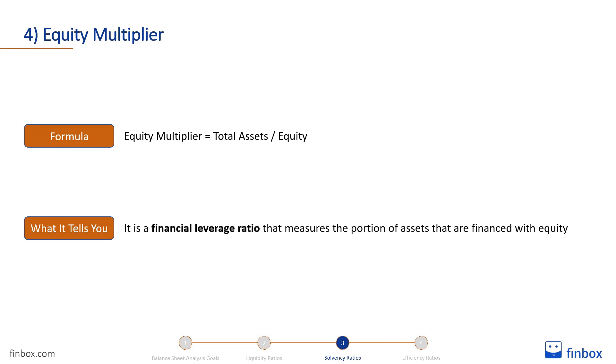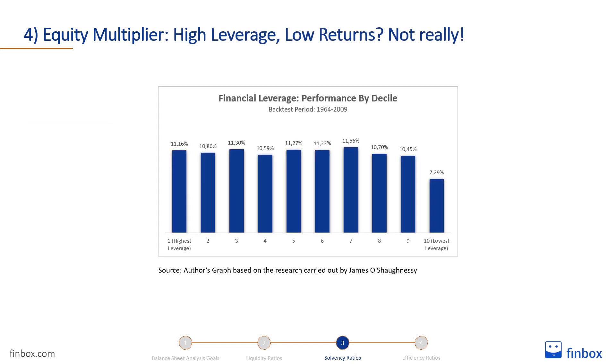It is common knowledge that high leverage is a bad thing. However, you'll be surprised to learn that, according to James O'Shaughnessy's research, high financial leverage doesn't necessarily mean that the stock will perform poorly. In his studies, he considers the entire US stock market and divides the stocks into 10 deciles according to their financial leverage. Stocks in the lowest decile — those with the lowest financial leverage — performed much worse than those in the highest decile. It seems that the market punishes stocks managed too conservatively, because low financial leverage can lead to low returns. Moreover, the equity multiplier alone can't tell you much: a company with high financial leverage may be safer than one with lower leverage if it generates much more cash flow to cover that debt.